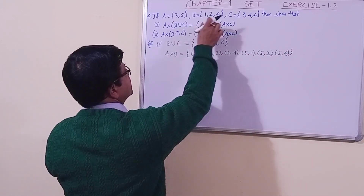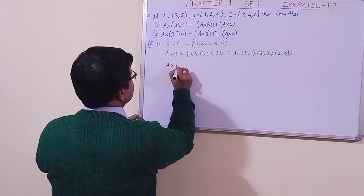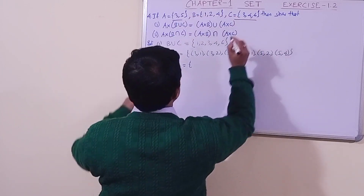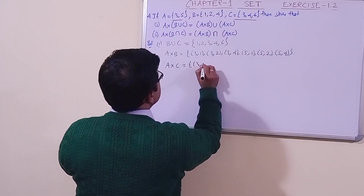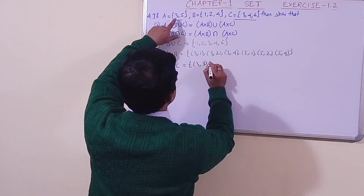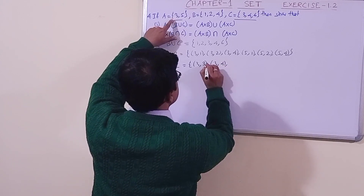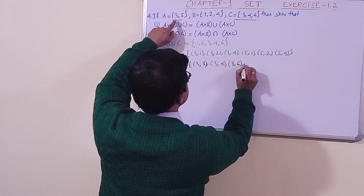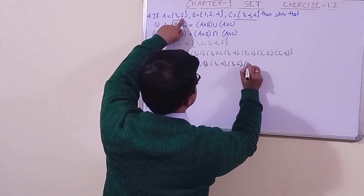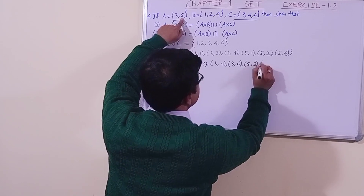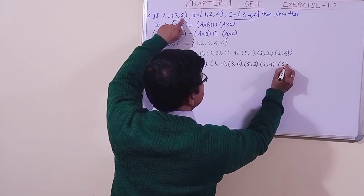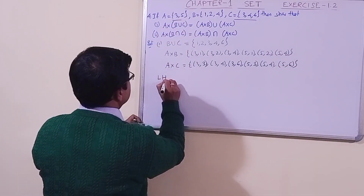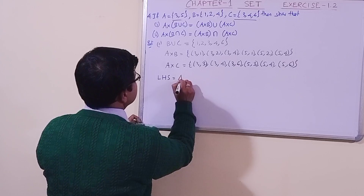Now let us find A cross C. A cross C gives the ordered pairs: (3,3), (3,4), (3,6), (5,3), (5,4), (5,6). Now let us solve the left-hand side.